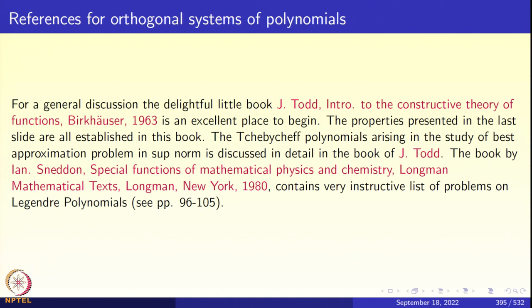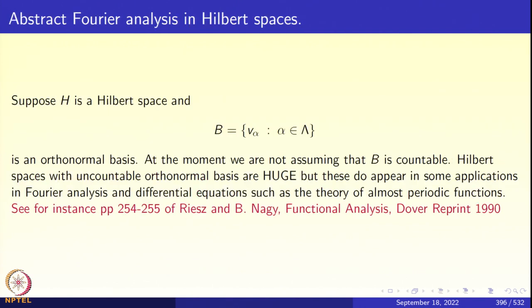With these general references, I go to the next item in this chapter: Abstract Fourier Analysis in Hilbert spaces. We start with an abstract Hilbert space H. So far we have been looking at concrete examples — the Bergman space, L2(−1,1), L2 of the real line, Hermite functions. Now we push the abstract theory further. We take a Hilbert space H and an orthonormal basis B, meaning B consists of pairwise orthonormal vectors whose linear span is dense in the whole space.